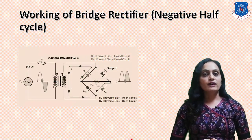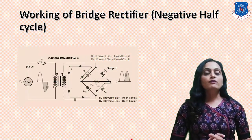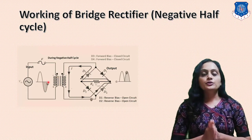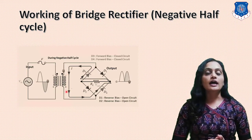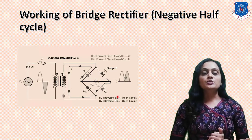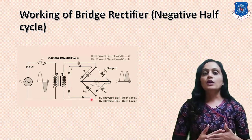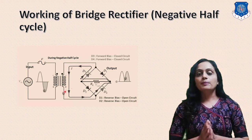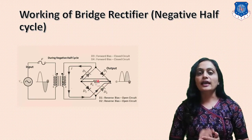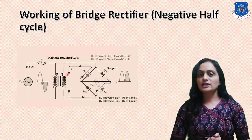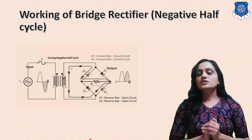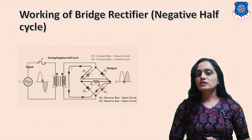Now we will see the working of the bridge rectifier for the negative half cycle. You can see in the figure — the input on the primary of the transformer is the negative half cycle, and due to that the polarity on the secondary is such that diode D3 and D4 are in forward bias and turn on, while D1 and D2 are in reverse bias and are off. The current follows the path from the secondary terminal through D4, then the resistor, then through D3, to the upper terminal of the secondary. The path of current flow is shown in the figure and the output voltage is also shown.